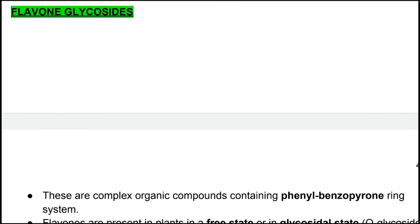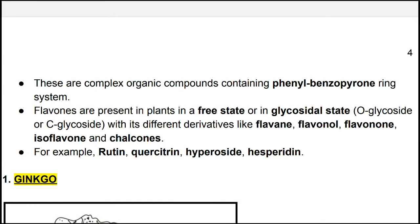The next class is flavone glycosides. These are complex organic compounds containing a phenyl benzopyrone ring system. Flavones are present in free state and glycoside state, which includes O-glycosides and C-glycosides with different derivatives.